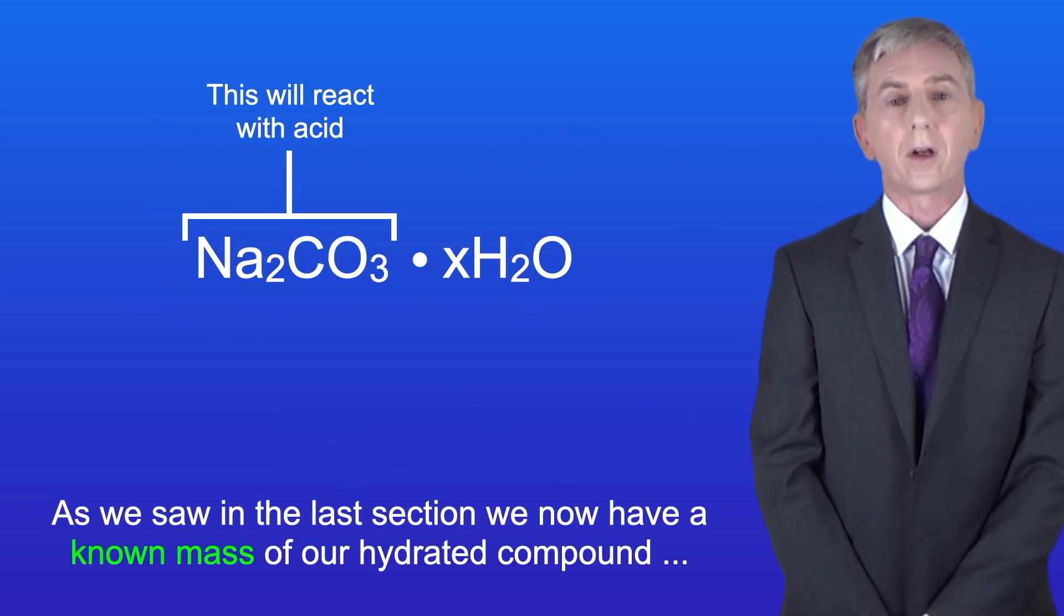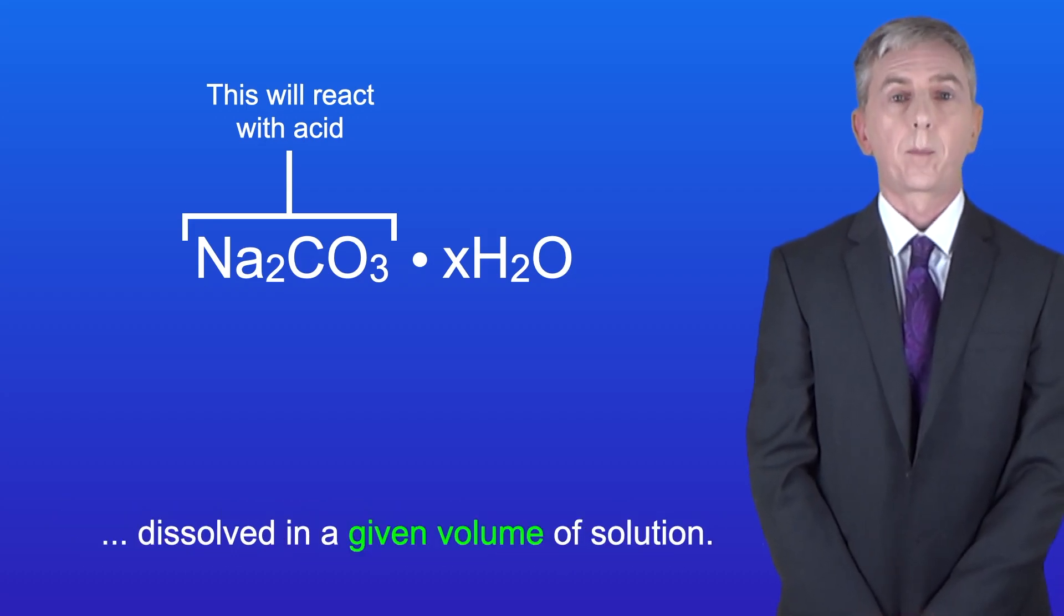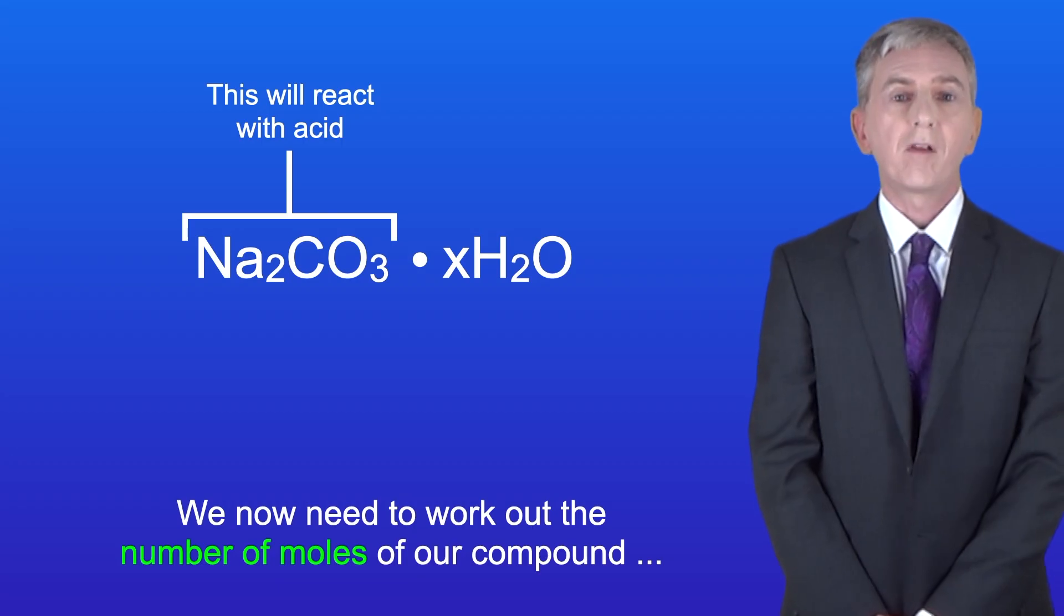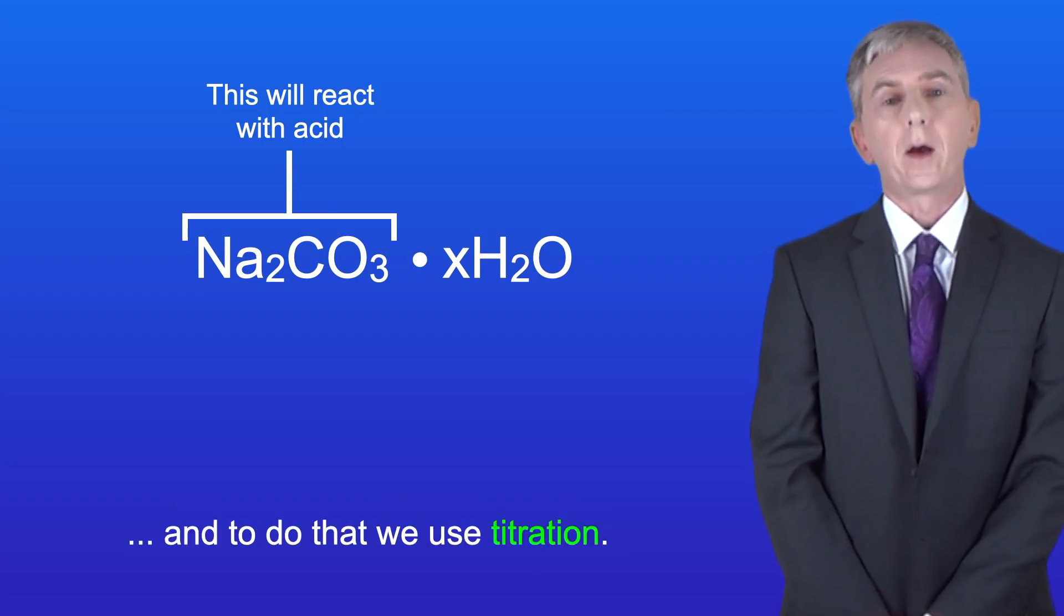So as we saw in the last section, we now have a known mass of our hydrated compound dissolved in a given volume of solution. We now need to work out the number of moles of our compound, and to do that we use titration.